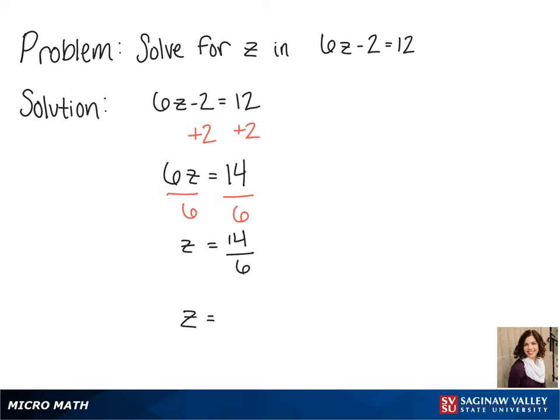We can simplify this fraction by dividing both the top and bottom by 2, so we get 7 over 3.